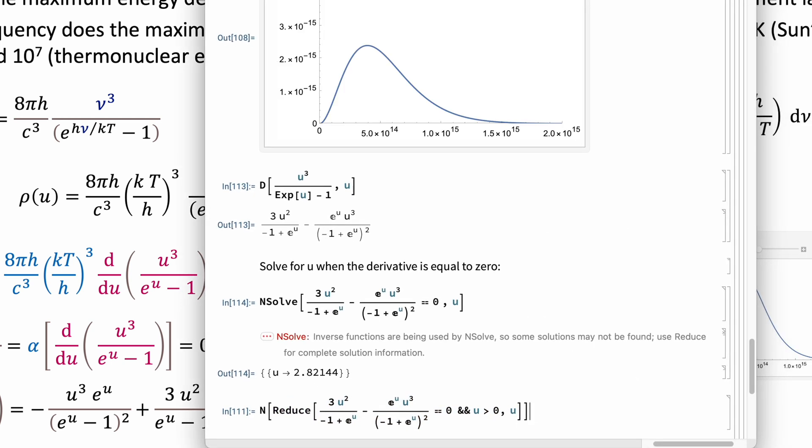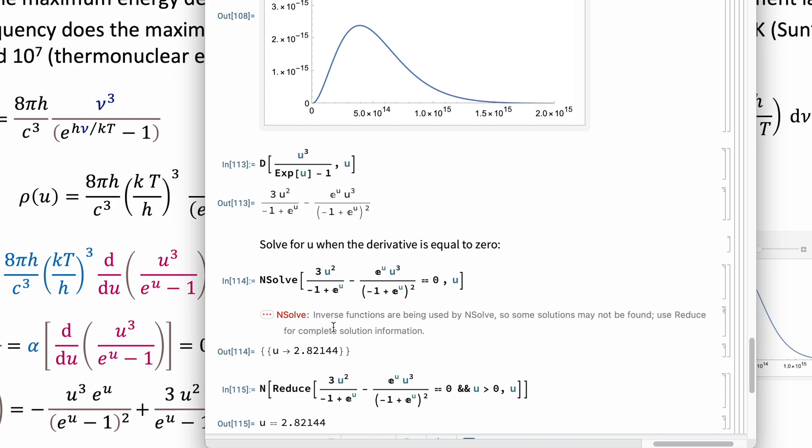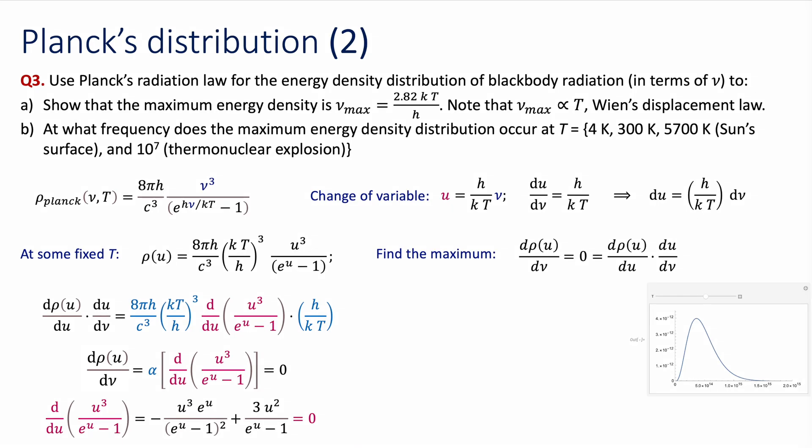That's the meaning of that syntax. And then, yes, I got exactly the same value. So I come back to my problem, and I say, well, the value of u that solved this problem is 2.82. And when u is equal to 2.82, that's the frequency at which my distribution is a maximal. That's why I call this frequency max.